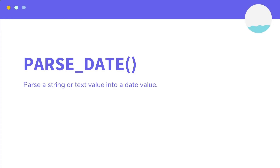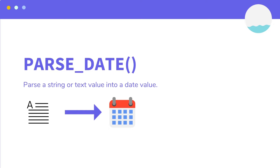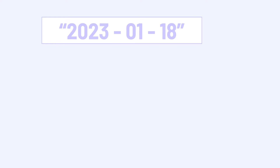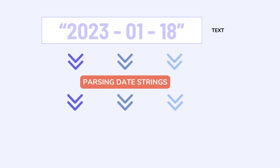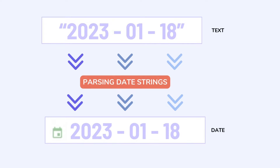The parseDate function is used to parse a date string or date text value into a date value. Basically, it means that we have a date value but in Looker Studio it's recognized only as text, so you have to do something — which is parsing this date into an actual date value that's recognized by Looker Studio in order to use all the special features available for date fields.